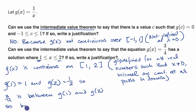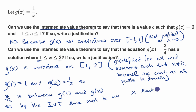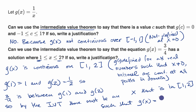By the intermediate value theorem, there must be an x in the interval from one to two such that g of x is equal to three-fourths. So yes, we can use the intermediate value theorem to say that the equation g of x equals three-fourths has a solution, and we are done.